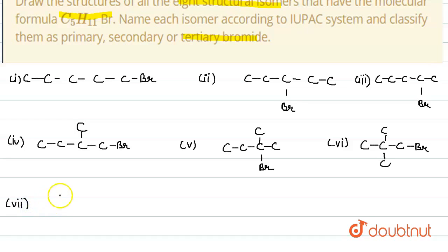Another possibility can be when branching is possible in such a way that bromine is present on the second position. And one more possibility is there when one type of branching is possible, when carbon is attached here and bromine is here.